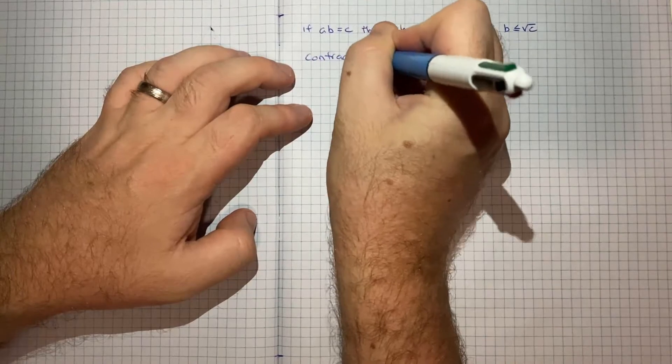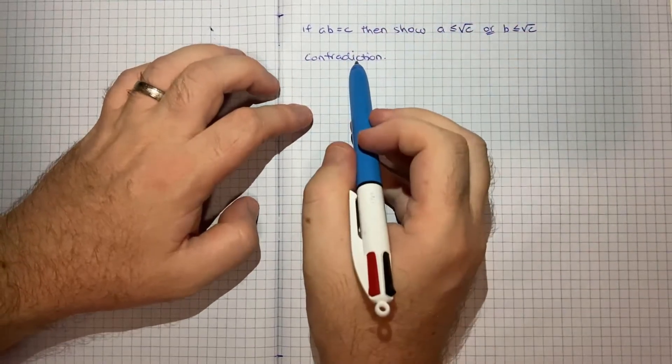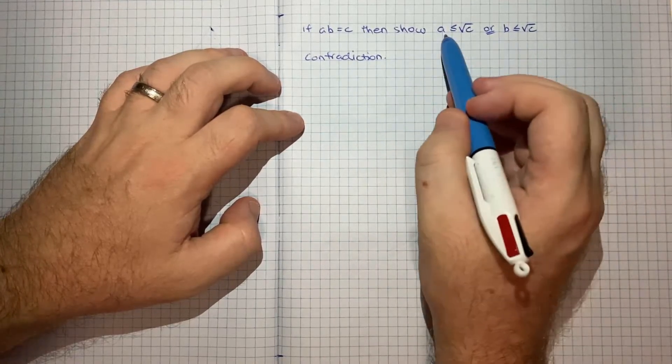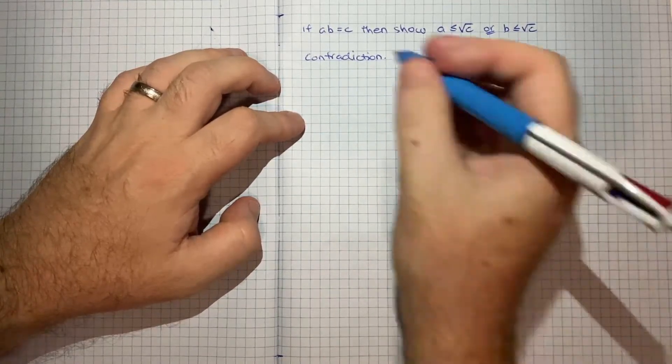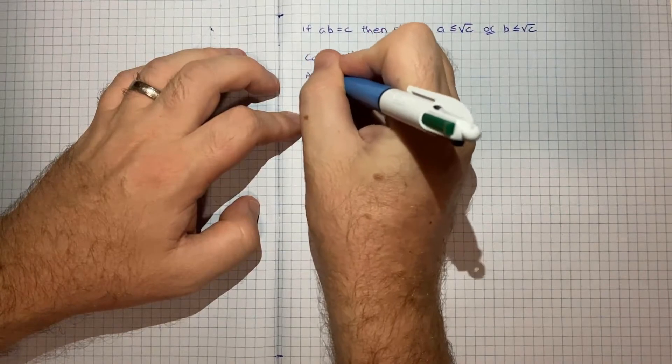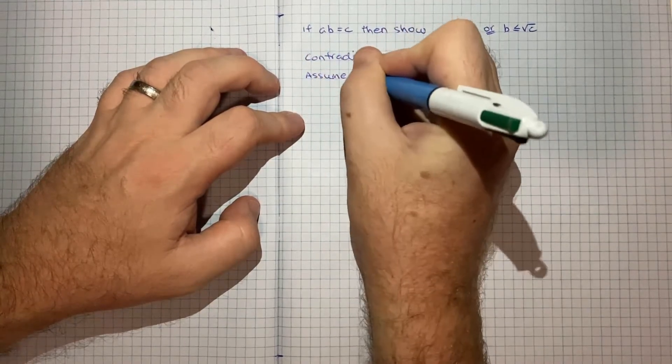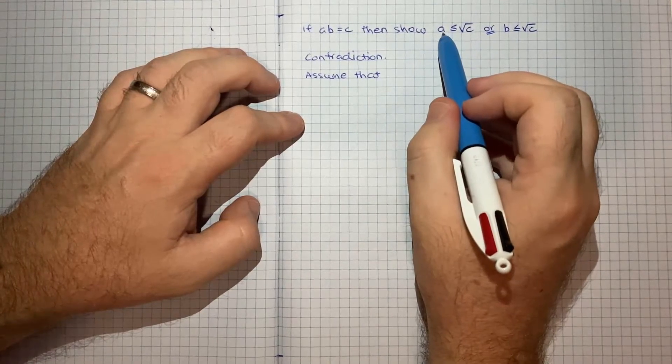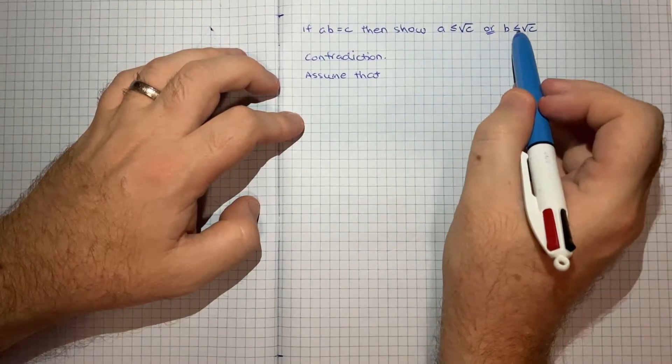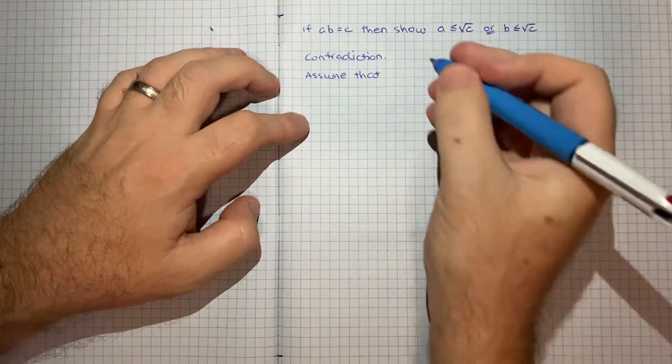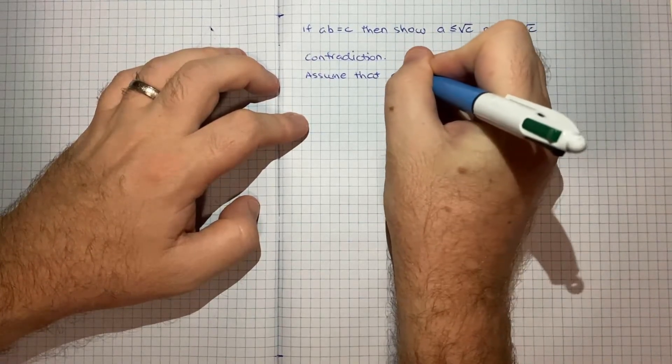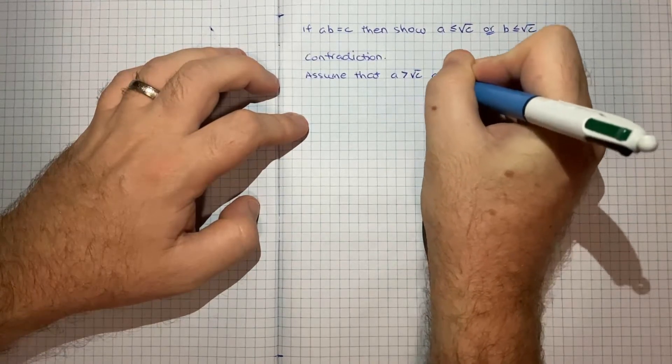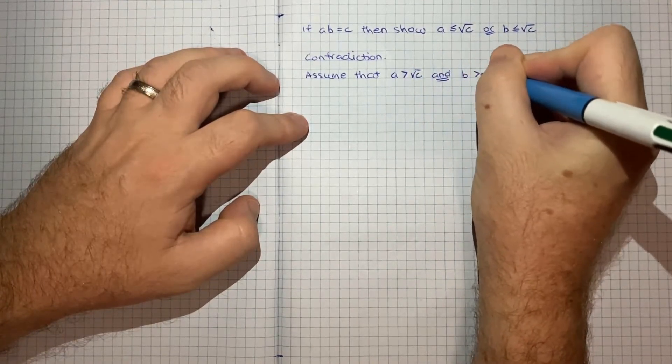And the way to perform a proof by contradiction is to start by assuming the opposite of what you're trying to show. So we're going to assume that, okay, so what's the opposite of a less than or equal to root c or b less than or equal to root c? The opposite of that would be a greater than root c and b greater than root c.